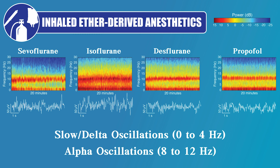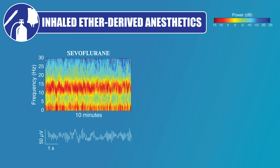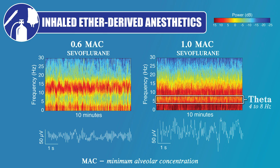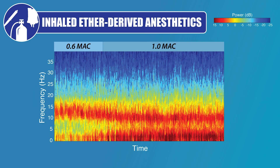However, unlike propofol, when the ether-derived anesthetics are administered at approximately the minimum alveolar concentration, MAC, or greater, the alpha oscillation appears to drop down in frequency a bit and a strong theta oscillation appears. This may reflect one of the non-GABAergic mechanisms of how the inhaled ether-derived anesthetics affect arousal. The appearance of the theta oscillations indicates progression into a more profound state of unconsciousness for an inhaled ether-derived anesthetic.